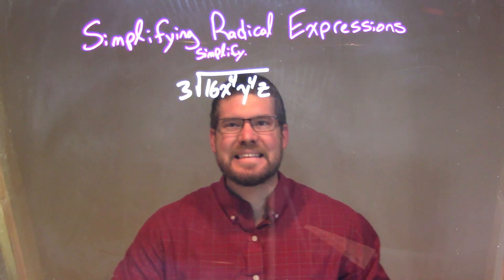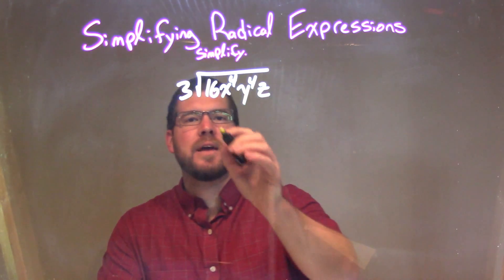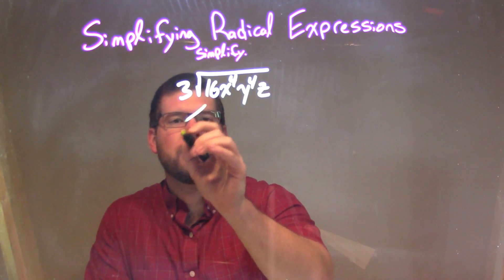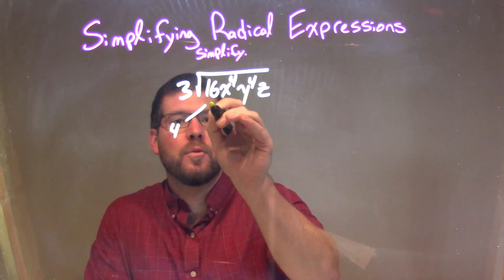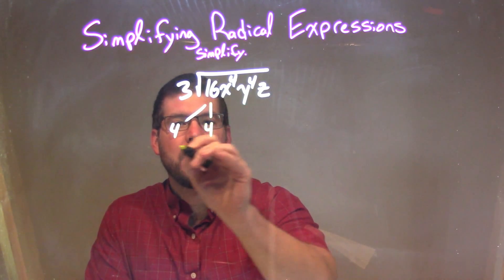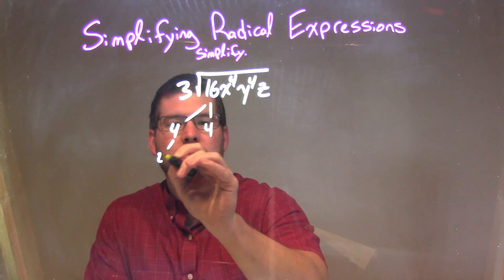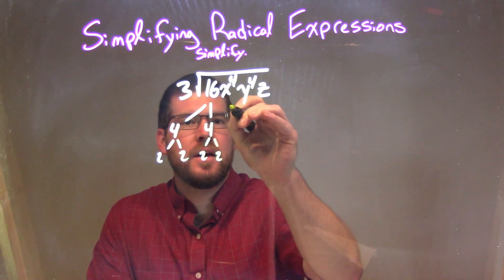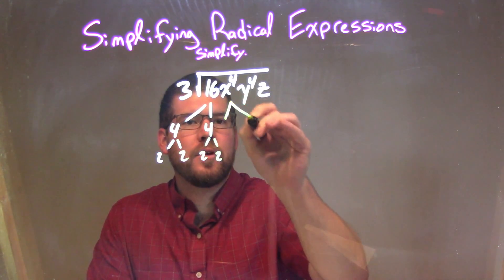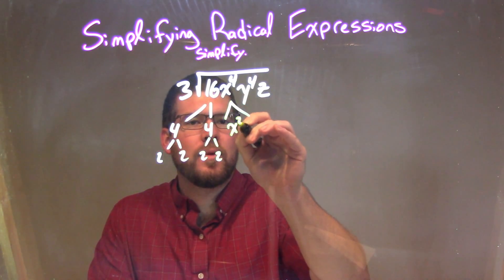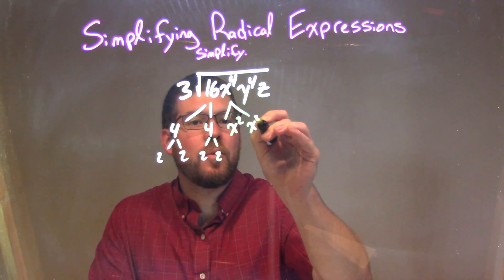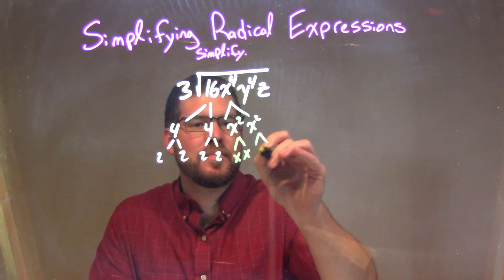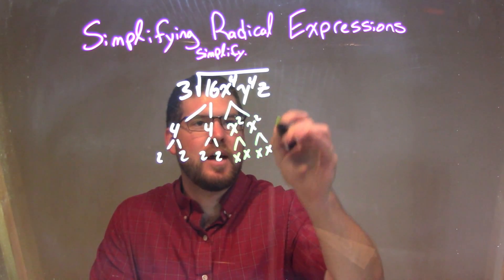So what I'm going to do is break this down. I'm going to break down 16. 16 is just 4 times 4, and 4 times 4 is 2 and 2, and 2 and 2. x to the 4th is just x squared times x squared, which I can break down to be x times x and x times x.